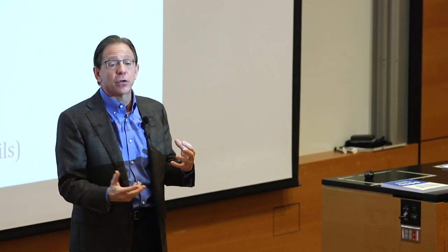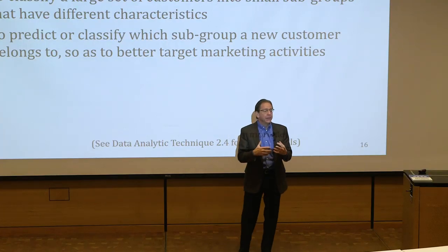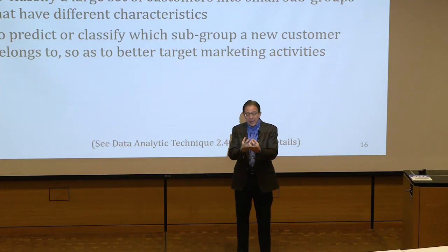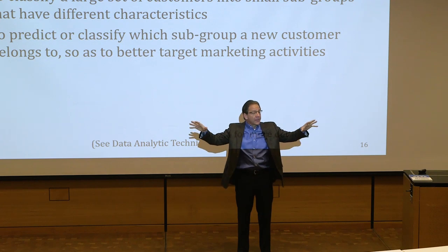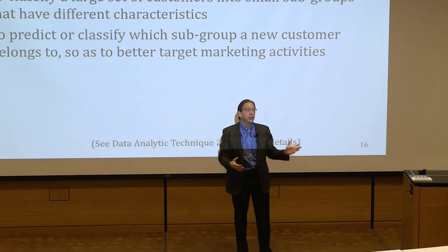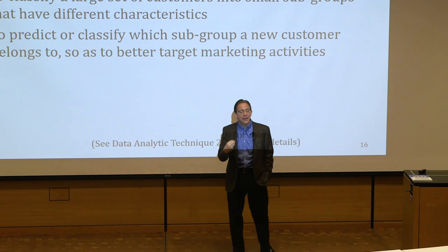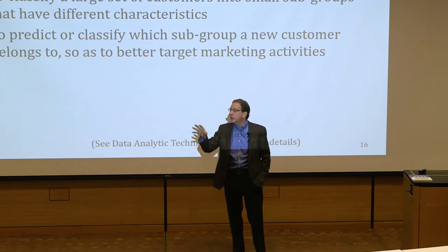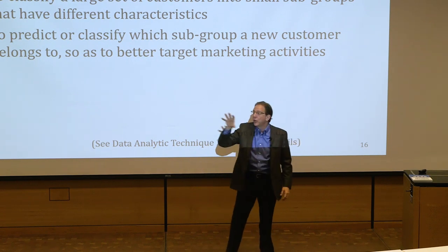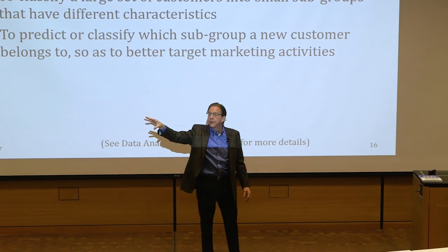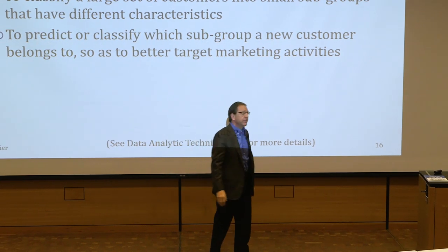After segmentation on needs and wants, you use observable data to develop a model to find these people. Sometimes age, gender, and income aren't enough — you might need credit score, where they went to college, where they grew up. It's very powerful: first you use a survey to segment, then you use the discriminant model to find them. Why find them? Because you might do expensive marketing and don't want to spend dollars on people who will never buy your product — only on people who potentially could.